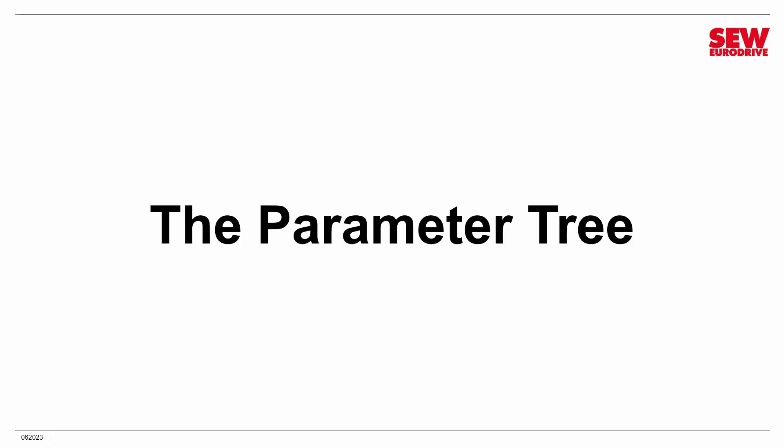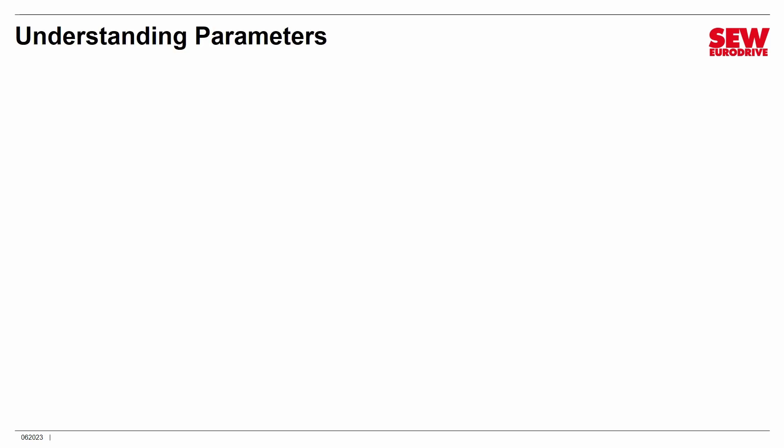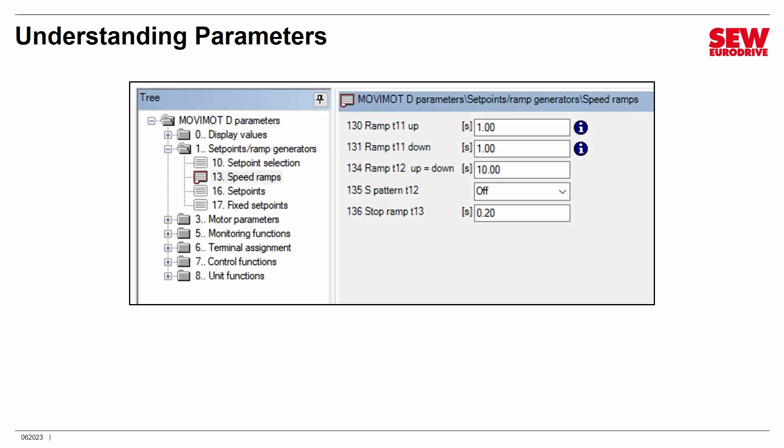Although I introduced you to the Parameter Tree in the last session, I want to talk about it more formally this time because we're going to be doing a lot more with it. Let me first introduce this topic by explaining how to understand parameters. When you work with the Parameter Tree, you will frequently be told by various people or pieces of documentation to change or modify certain parameters. You need to understand what they're saying or what that documentation is pointing you to.